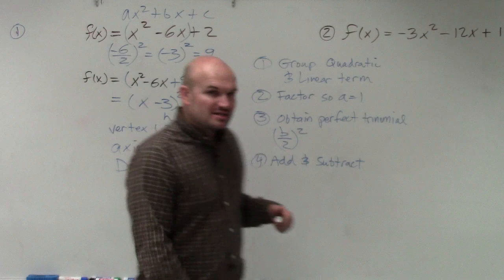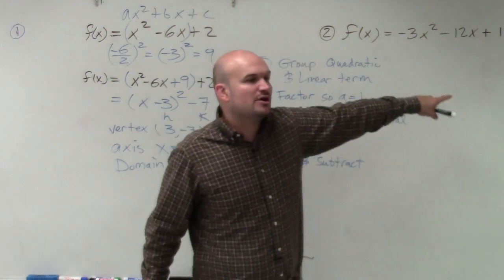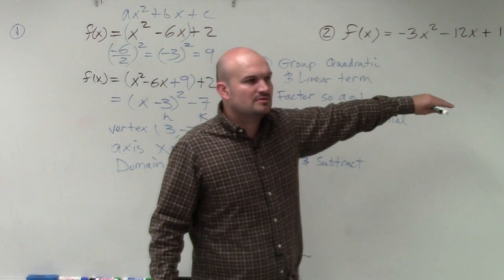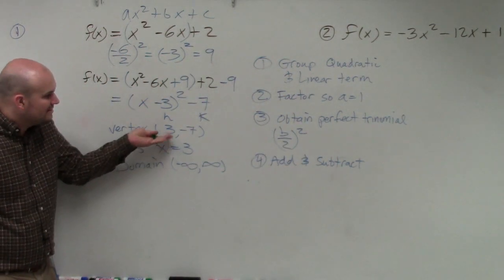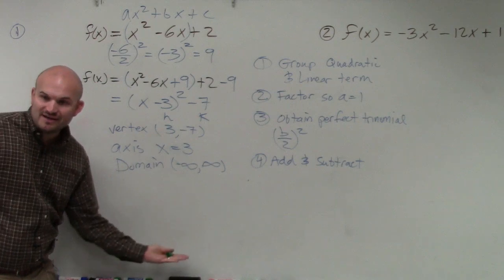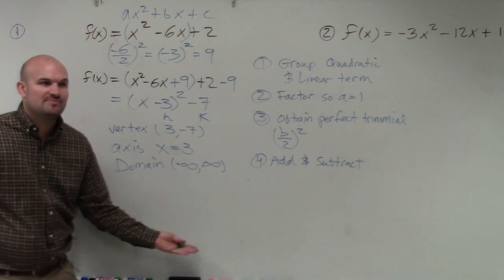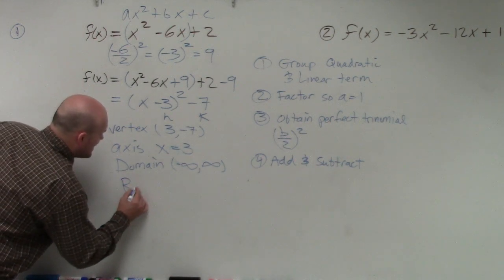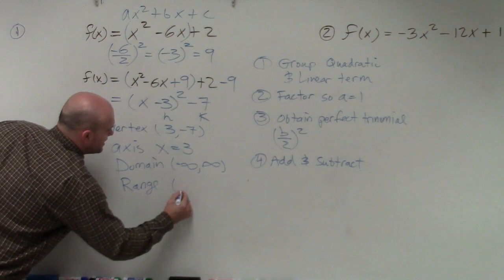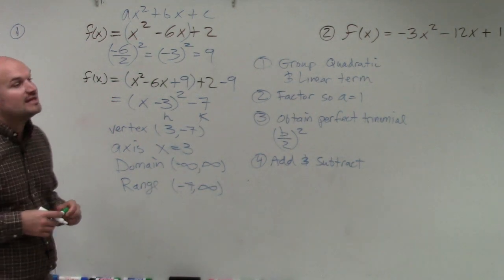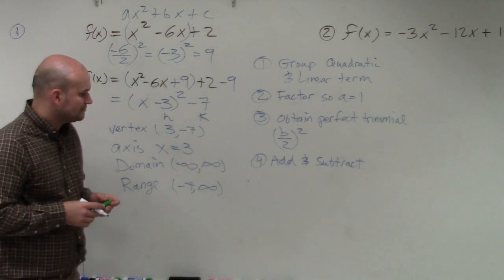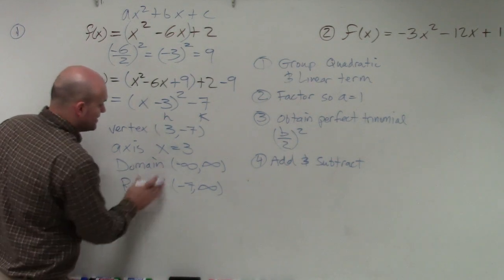My domain is going to be all real numbers. But my range is going to be different. If you guys remember the parent graph over there, how low did the graph go? 0. But now what has happened to my graph? My graph has now been shifted down 7. So now the lowest point is going to be negative 7. So my range is from negative 7 to infinity. Yes, it would be included.